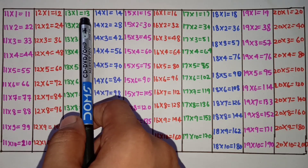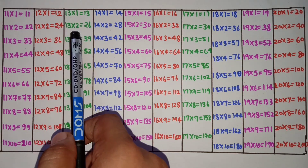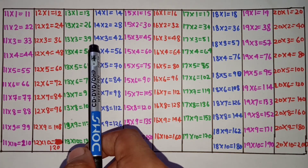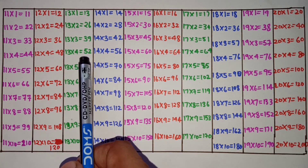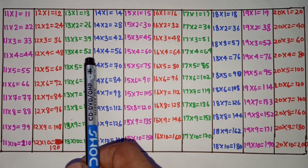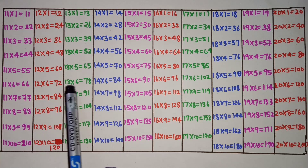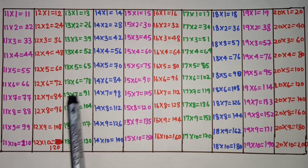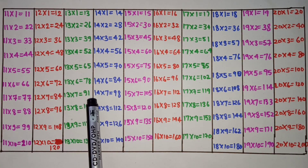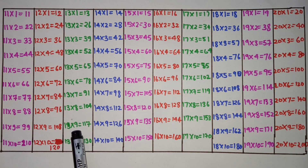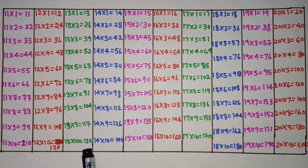13×1 is 13, 13×2 is 26, 13×3 is 39, 13×4 is 52, 13×5 is 65, 13×6 is 78, 13×7 is 91, 13×8 is 104, 13×9 is 117, 13×10 is 130.